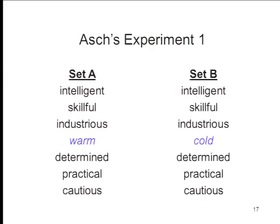To make it concrete: from Asch's first experiment, some subjects viewed these seven terms — intelligent, skillful, industrious, warm, determined, practical, and cautious. Another group viewed the same terms except with one change — cold instead of warm. Same set of words with just one exception: Set A describes the person as warm, Set B describes the person as cold.